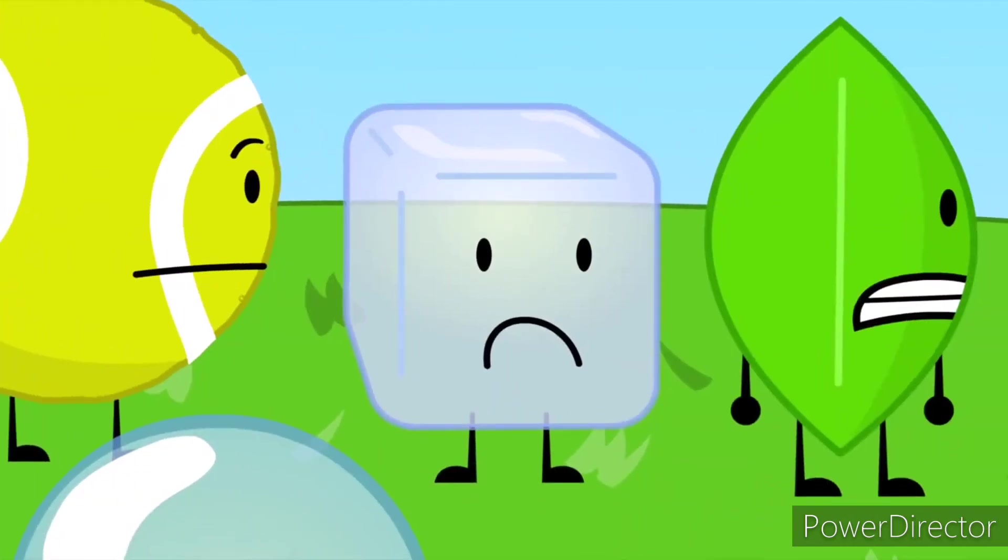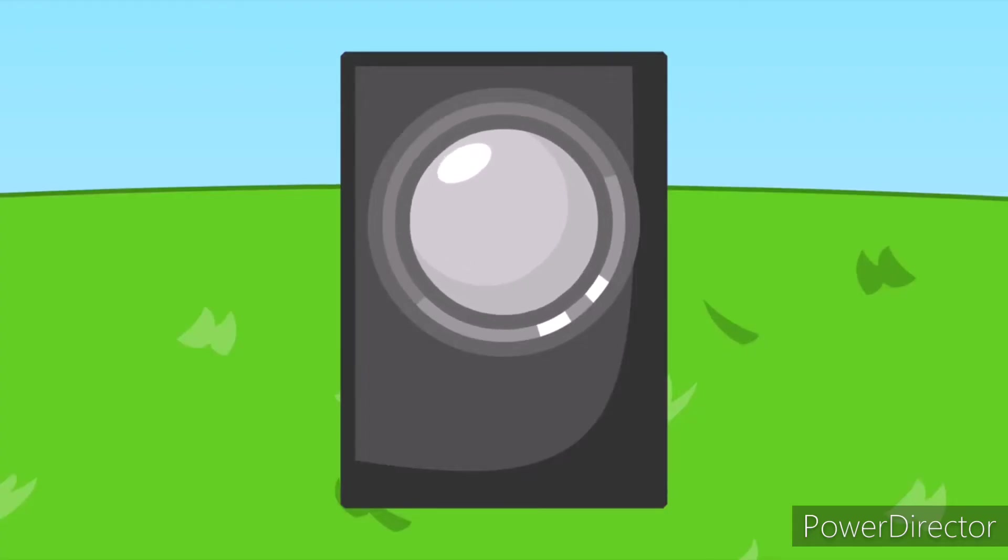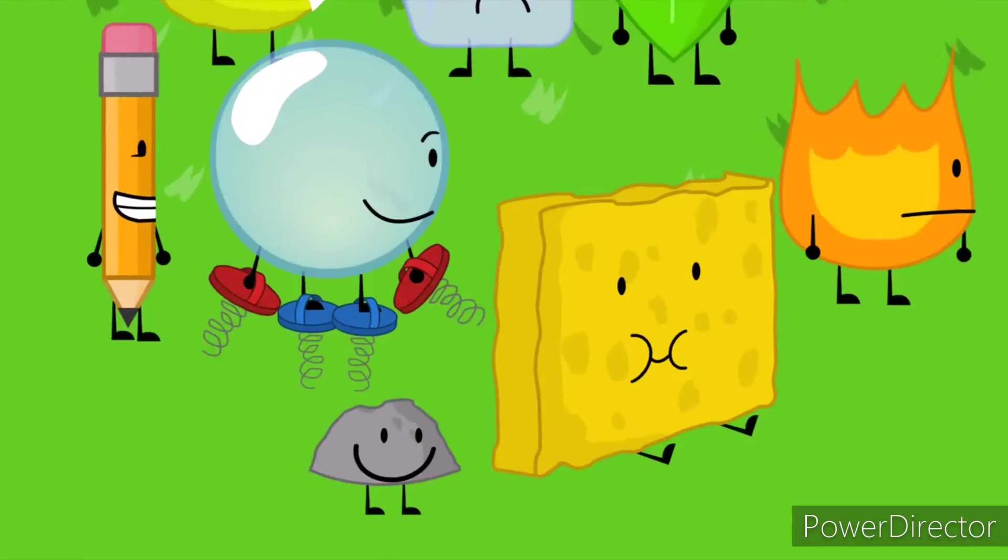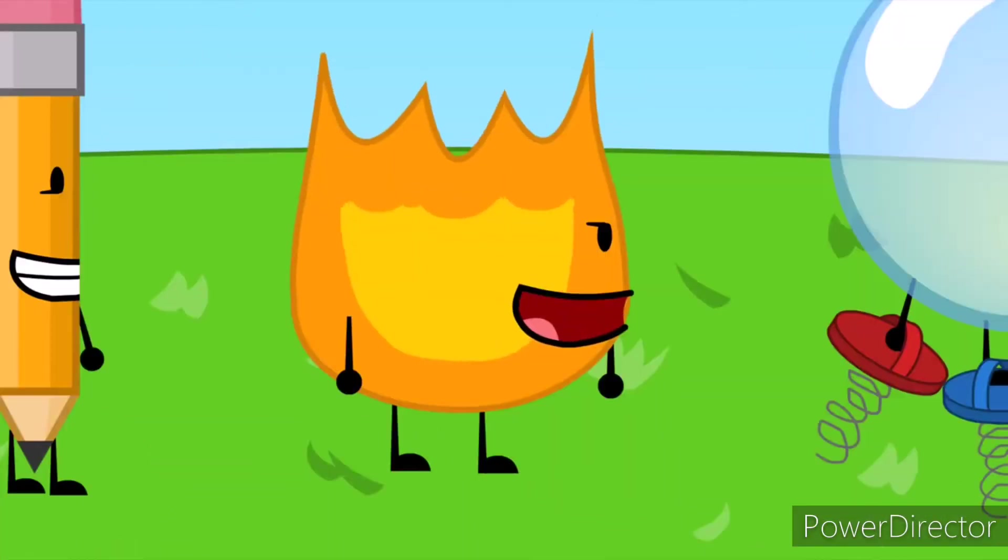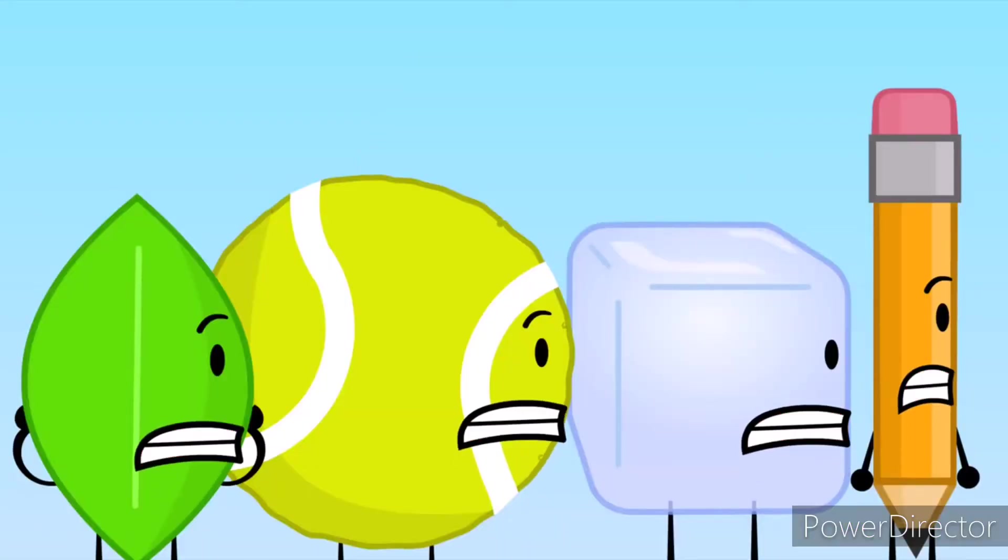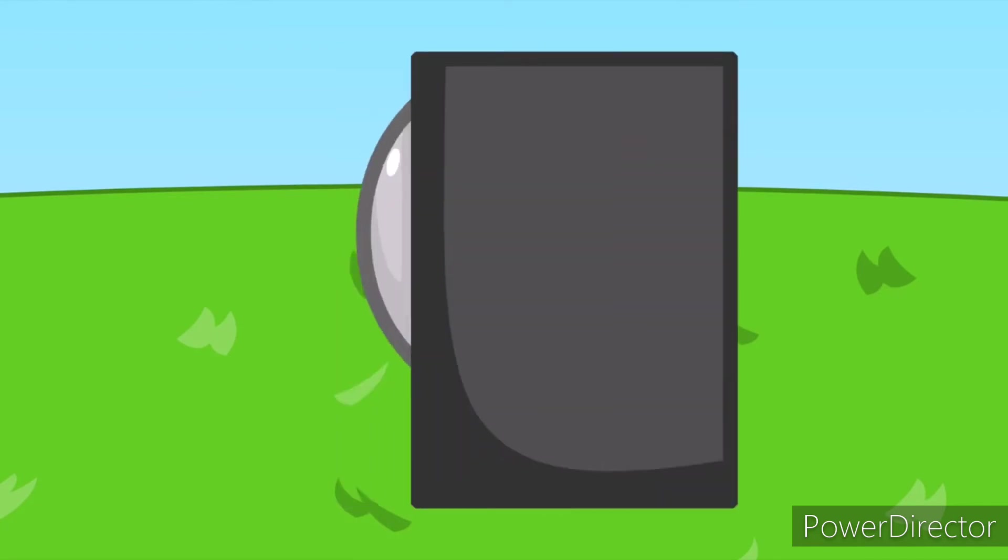So these are your current scores. Tennis Ball, Ice Cube, and Leafy are in the danger zone. But the voters won't be deciding who will be eliminated. The contestants will. The five contestants who aren't in the danger zone will have one month to choose who to eliminate. Finally, some control. But what will the voters vote on? Well, it turns out that one recommended character will join the game. We need help deciding which one. 30 characters were hand-picked out of hundreds. Here they are.